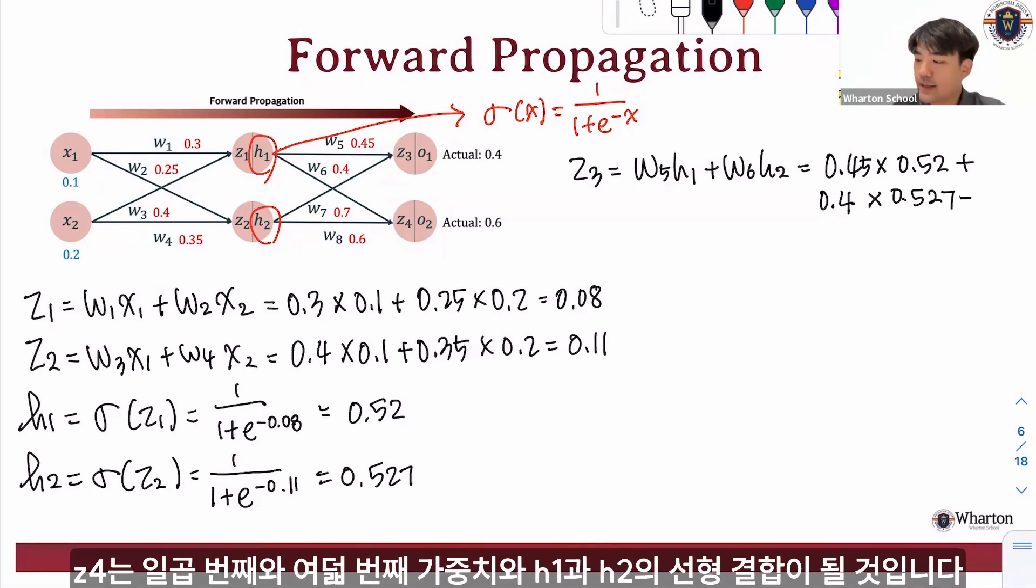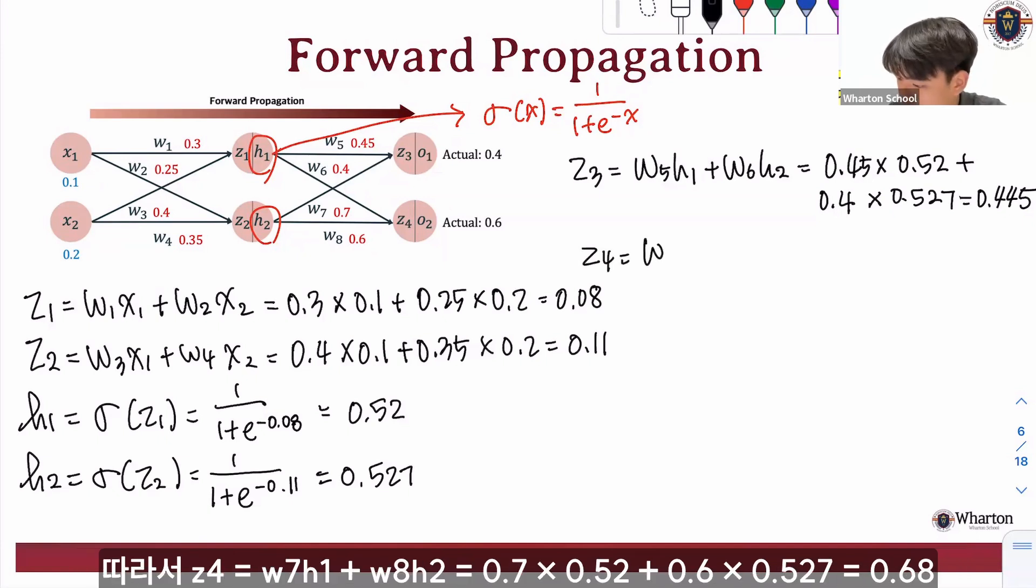And z4 will be the linear combination of the seventh and the eighth weight and h1 and h2. So w7 h1 plus w8 h2, which is 0.7 multiplied by 0.52 plus 0.6 multiplied by 0.527, which is 0.68.